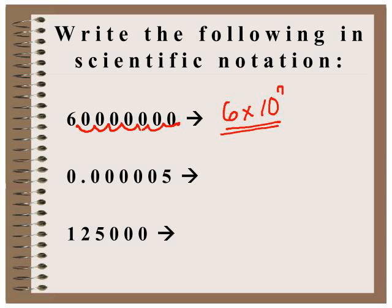So 6 times 10 to the seventh power. So you can see this is a lot faster, neater, and easier to read. Obviously with the positive exponent we know this is a number greater than one.